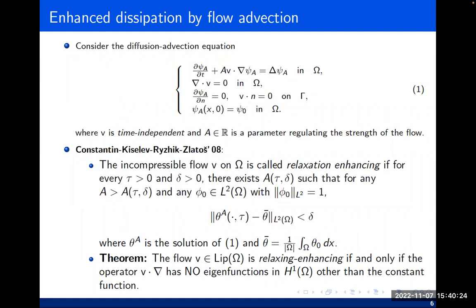They further characterized which type of flows have this property. The main theorem states: a flow in Lipschitz space is relaxation enhancing if and only if the advection operator has no eigenfunction in H¹ other than the constant function. This is a very specific characterization — if the advection operator has no eigenfunction in H¹, one can increase the parameter A to enhance diffusion. That's basically the result they obtained.